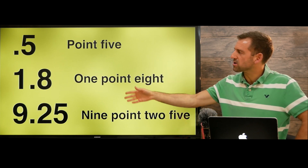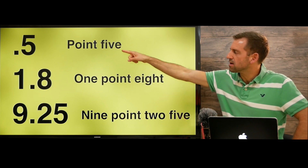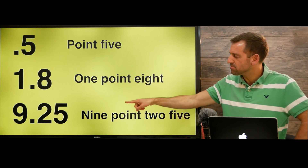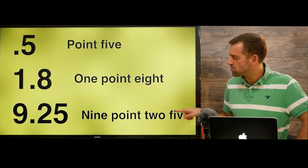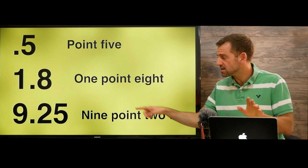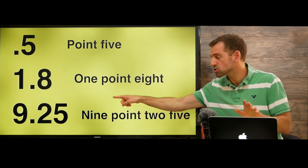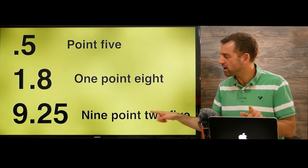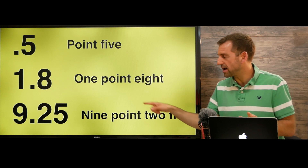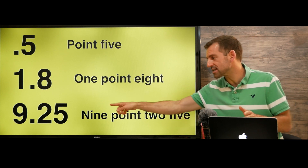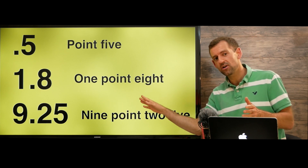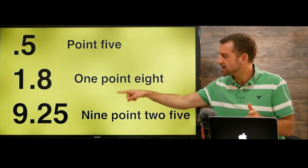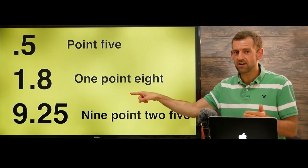So here are some more examples. This would be 0.5, 1.8, 9.25. Now this isn't 9.25 — it's just 9.25. So any numbers that come after the decimal, we just say individually. 9.25.